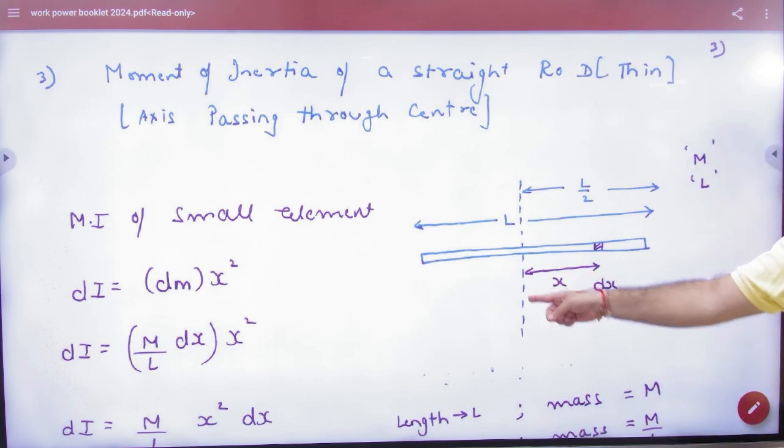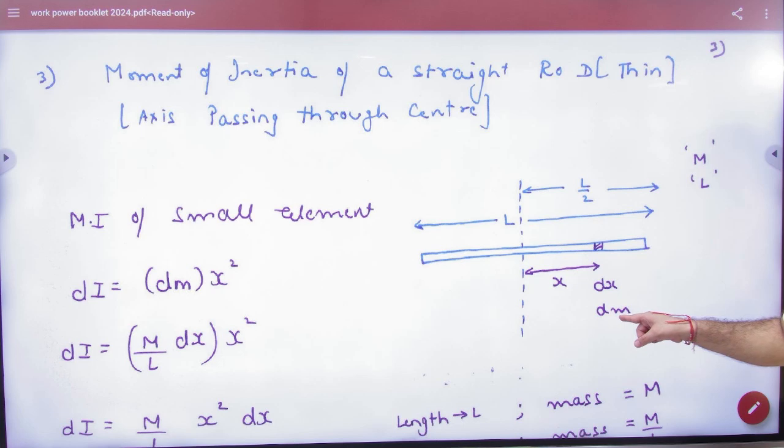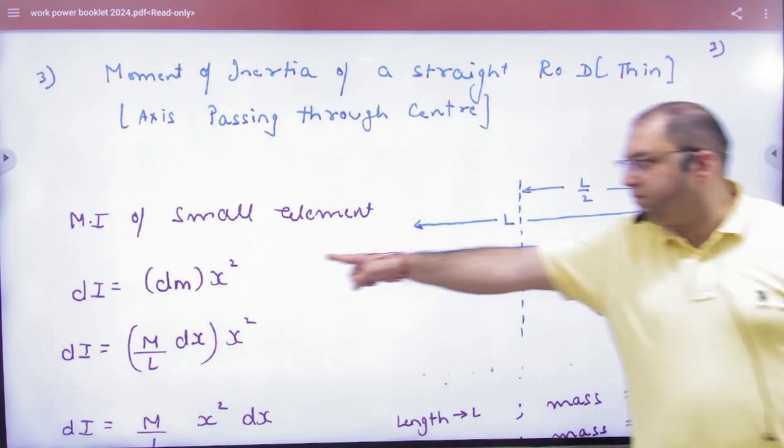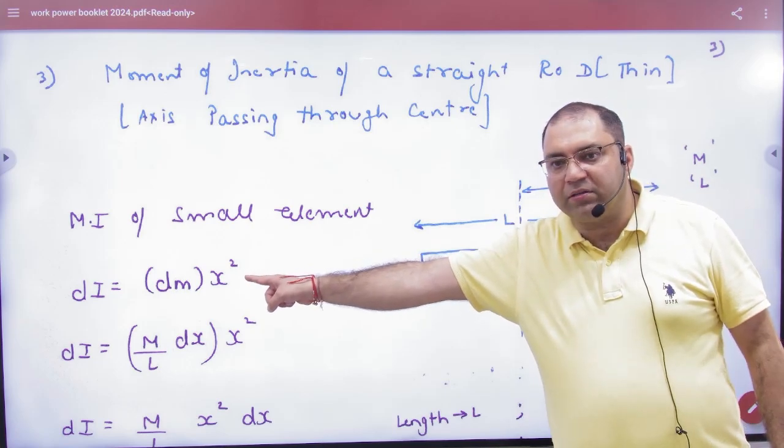So if this is the axis and this is point mass dm, then point mass ka moment of inertia - what will it be? dm into x square. Is this point clear? Point mass is dm into x square.